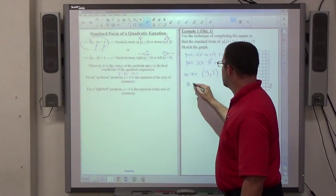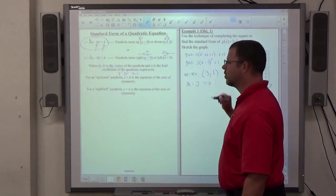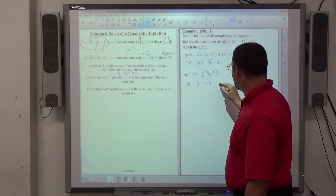I also know that a is equal to 2, which is greater than 0, so it's positive. That tells me my parabola turns upward.